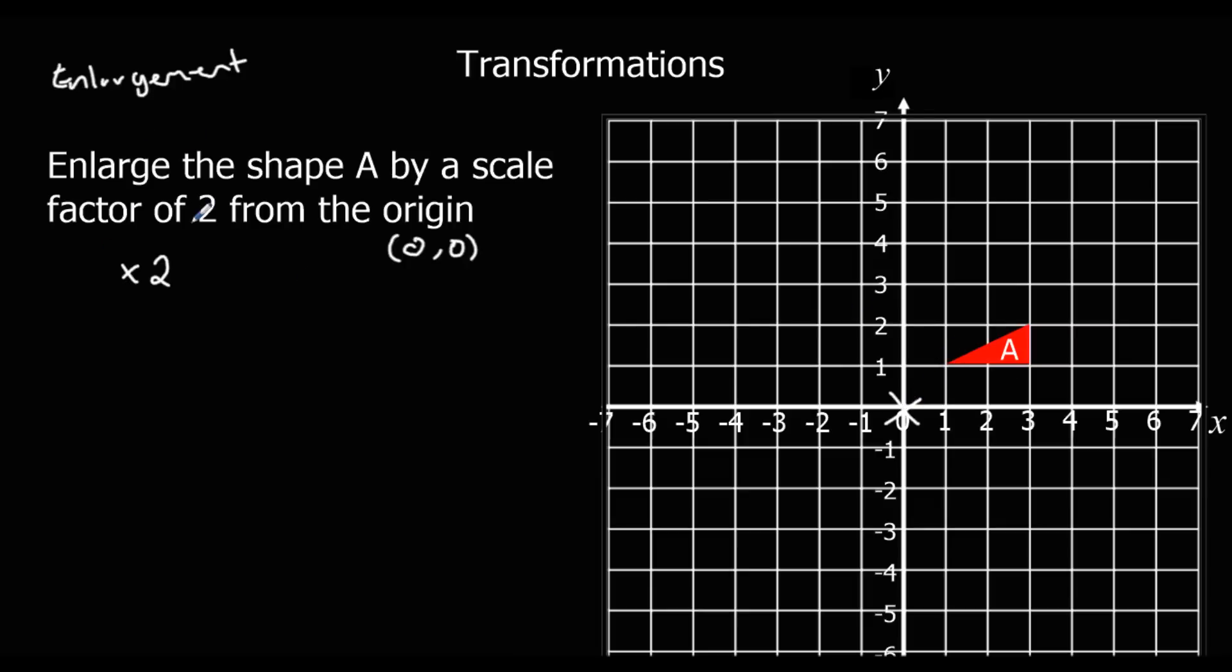If I'm doubling everything, I'm going to change that from 1 across, 1 up, to 2 across, 2 up. So that's going to be the new bottom corner, this point here, from the new shape.